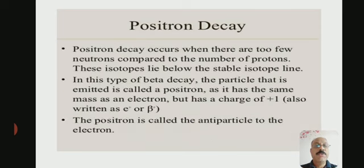Next we see positron decay. Positron decay occurs when there are too few neutrons compared to the number of protons. These isotopes lie below the stable isotope line.